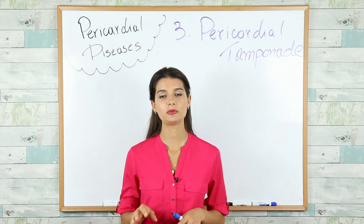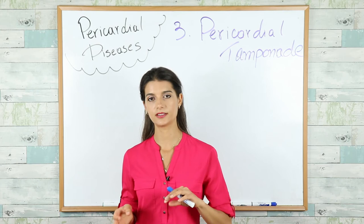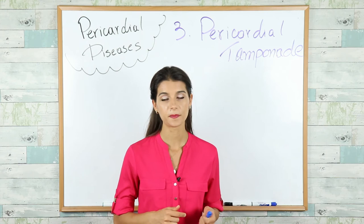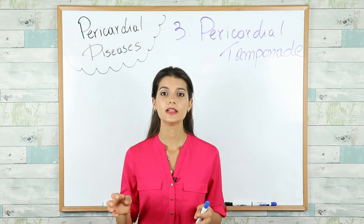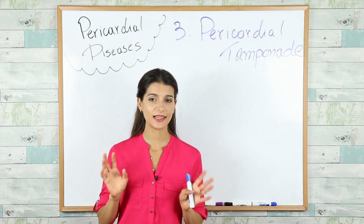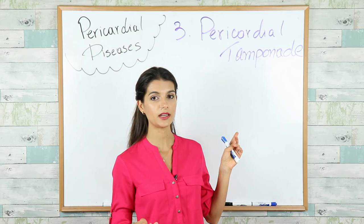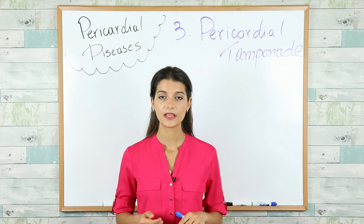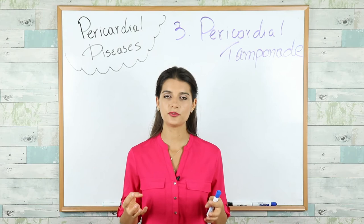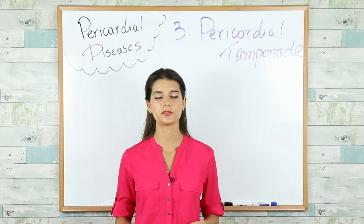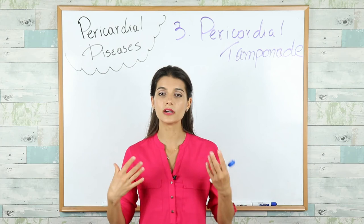Similar to constrictive pericarditis, tamponade leads to decreased filling of the right ventricle and decreased blood return to the right heart. If asked which part of the right heart collapses first, it's the right atrium — it's much weaker than the right ventricle. During diastole, the right ventricle collapses before the left ventricle because the left ventricle is more muscular, being the main pumping chamber of the heart.